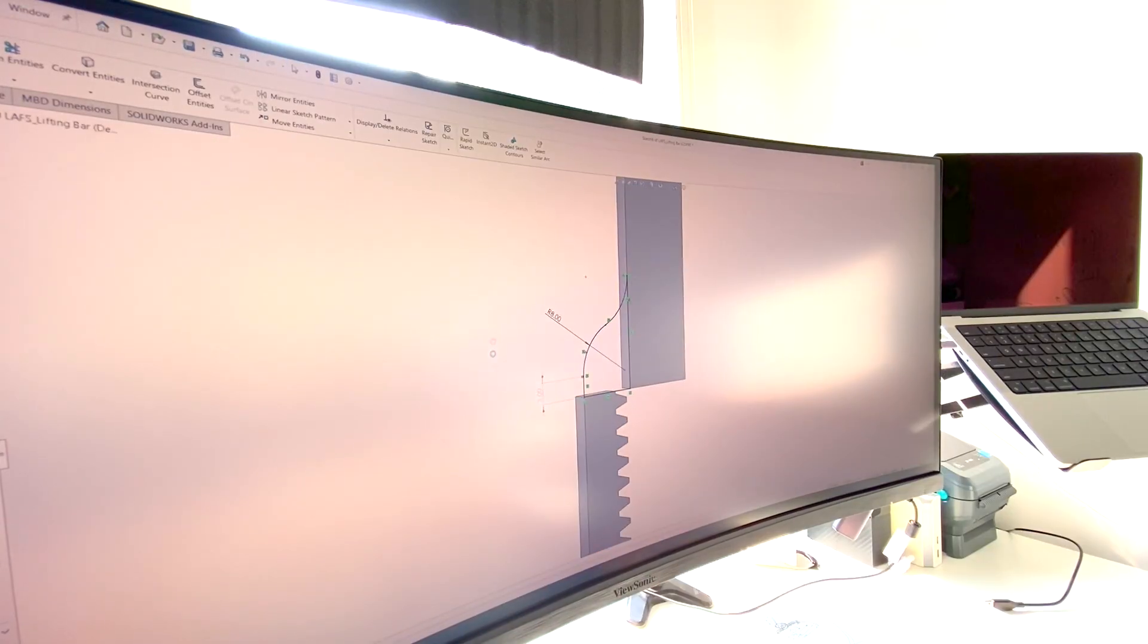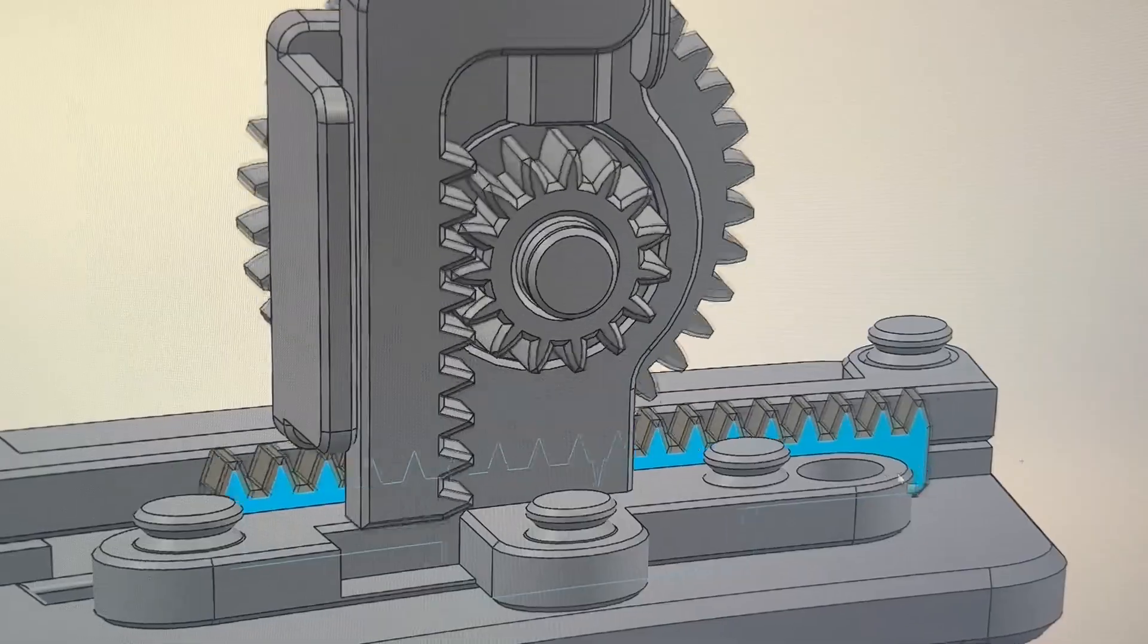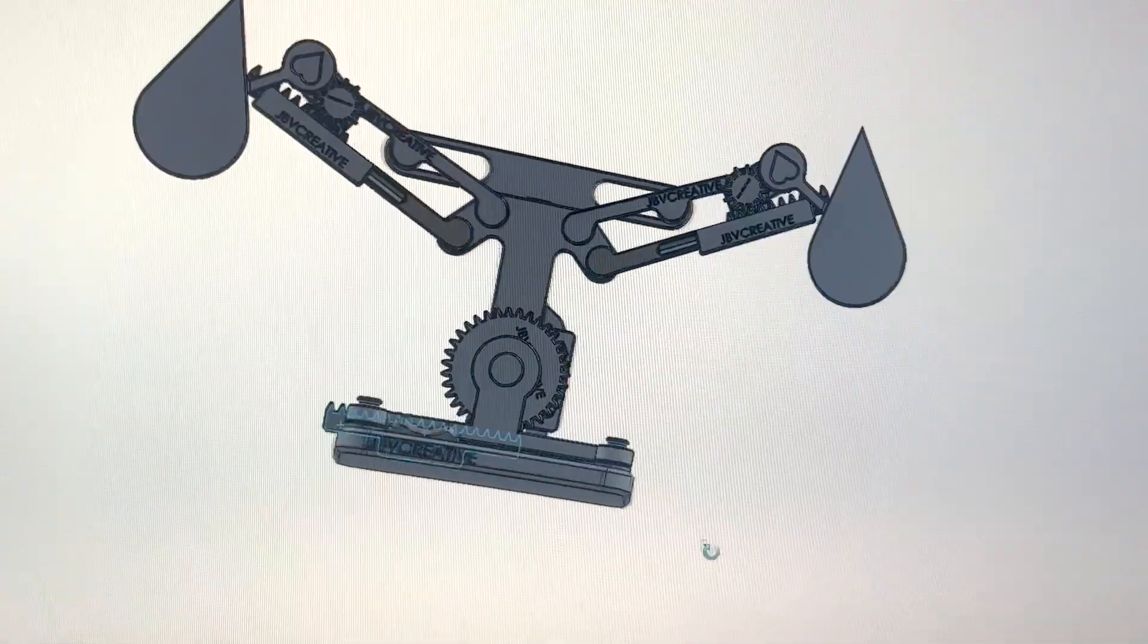After roughing out the mechanism, I refined all the parts ensuring that I had the right gear ratios to get the motion that I needed. Now that I had something that looked like it was going to work, it was time to get the parts ready for print.